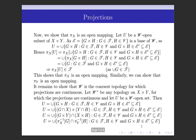Next we show that π_x is an open mapping. We have to show that the image of any W-open set under π_x is T-open. So we take U, a W-open set, and we have to show that π_x(U) is T-open.